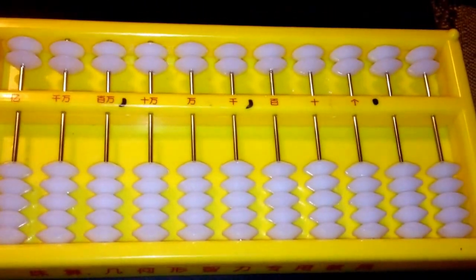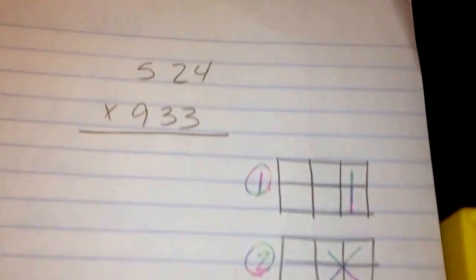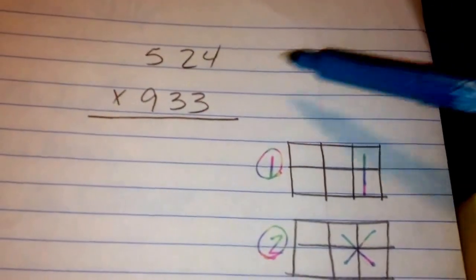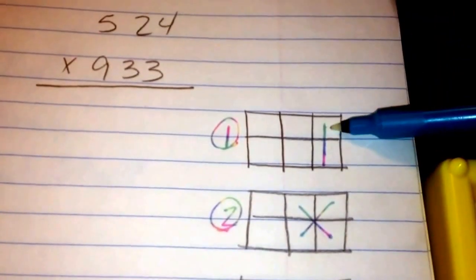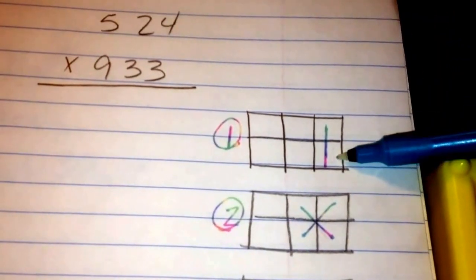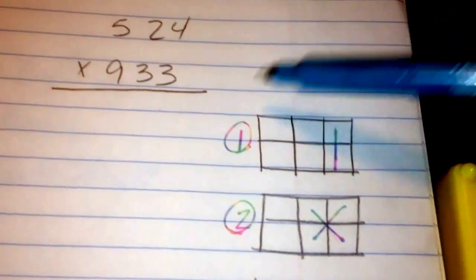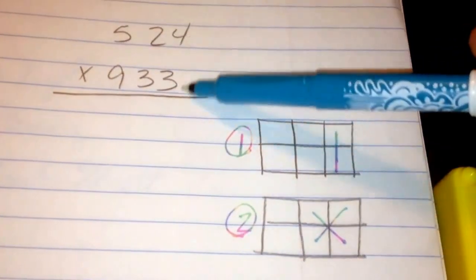Okay, so the first step to doing the criss-cross method is to multiply your far-right digits by each other. So my far-right digits are 4 and 3, so 4 times 3 equals 12.